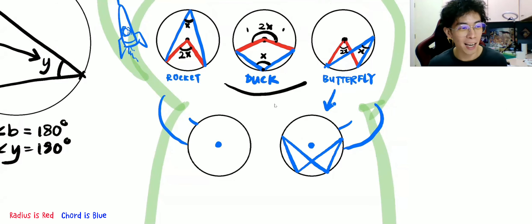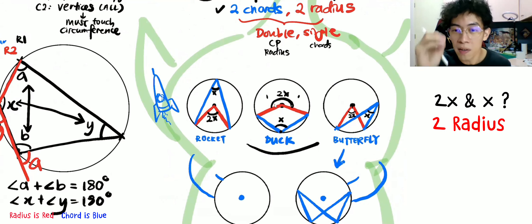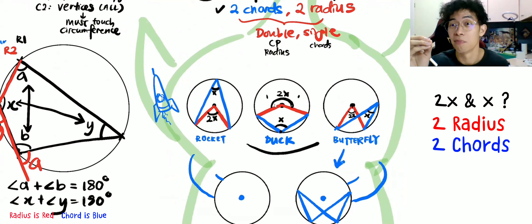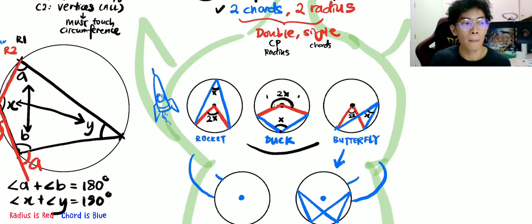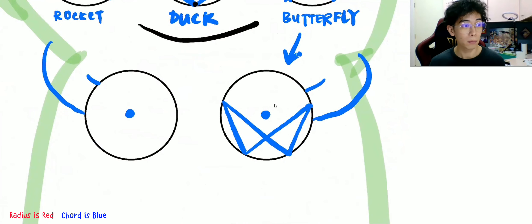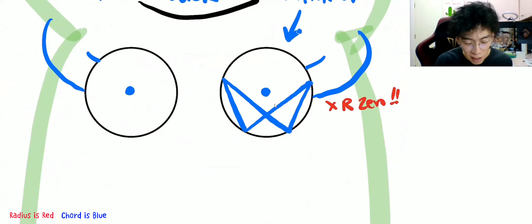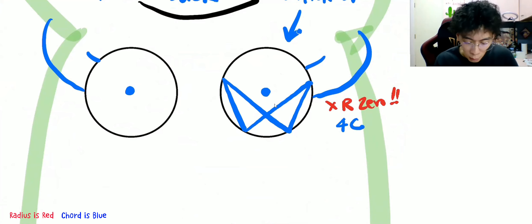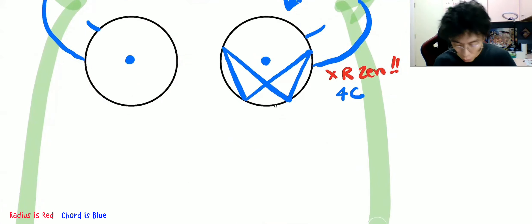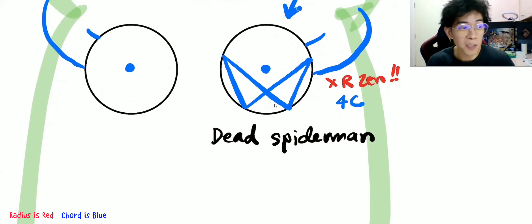I repeat: in order to apply your 2x and x rule, you must have two radius and two chords. Your teacher may have mentioned this. Over here — do you have two radius? No radius at all — zero radius. And you have chords? Plenty — four chords. But it must be exactly two. I will name this rule the 'Dead Spider-Man.'